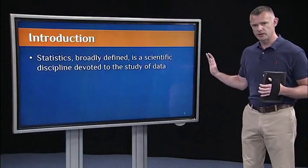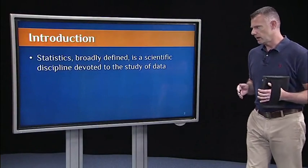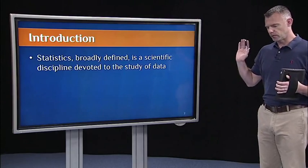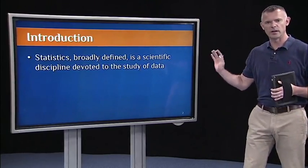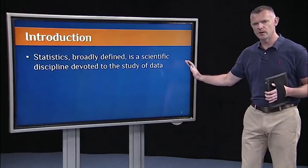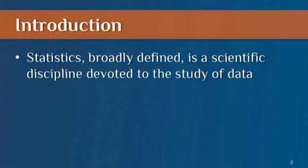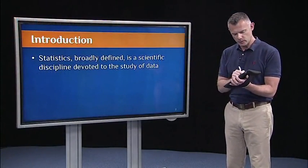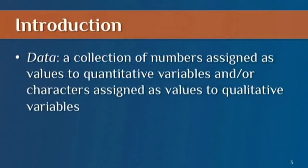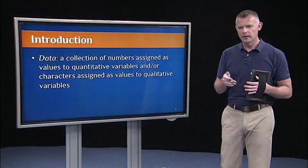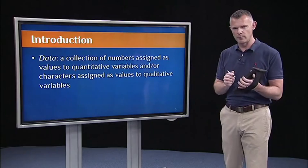So let's start with a basic definition of what is statistics. You could define it in many ways for something as broad as this. You could just Google statistics definition or look at the Wikipedia page. I've defined it very broadly here, just as the scientific discipline devoted to the study of data. That, of course, begs the question, well, what is data? Data simply is a collection of numbers assigned as values to quantitative variables, or characters assigned as values to qualitative variables. That sounds kind of technical, so what do I mean exactly? Let's look at an example.